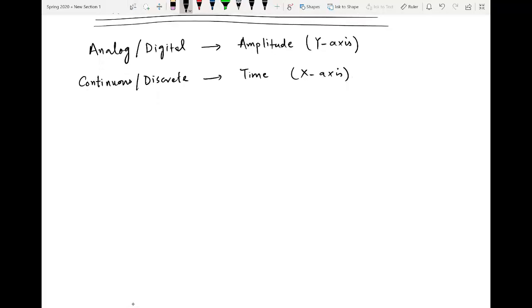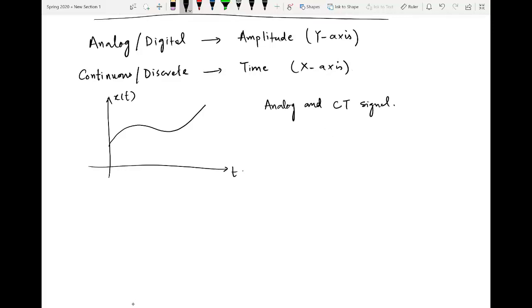As an example, consider this signal, which is x of t. This is the time axis and the signal has amplitude on the y-axis. The amplitude can take infinite values and the time is defined for all values. This means that the signal is analog or continuous time signal, CT for continuous time.